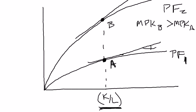So the slope of the tangent line at point B is right here. So it's clear that the marginal product of capital at point B is greater than the marginal product of capital at point A.